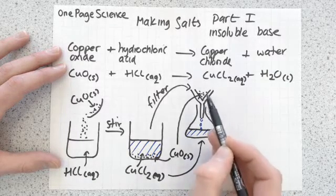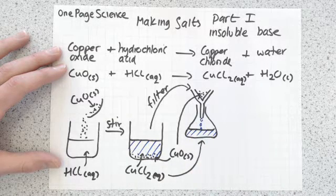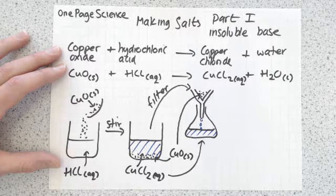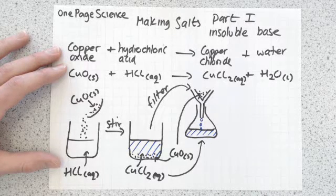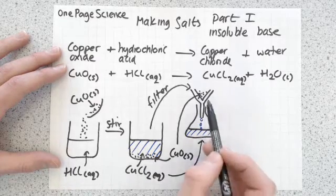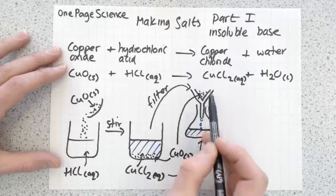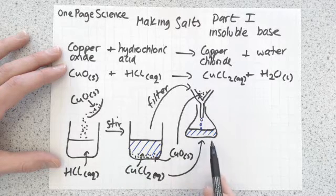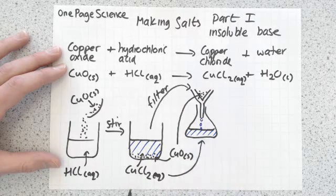It's a lot like how you make a cup of tea or coffee—you don't want all the bits in it, so you're filtering out to get rid of all the bits. Once the copper oxide has done its job, we don't want it anymore, so it gets left behind in the filter paper. This bit goes in the bin.